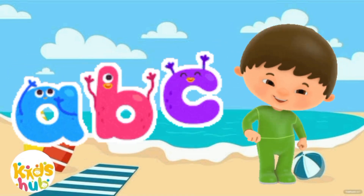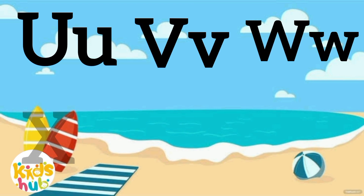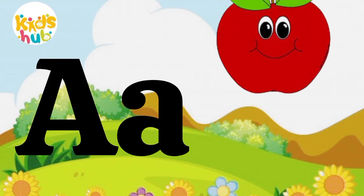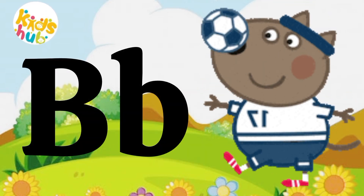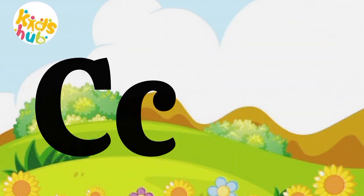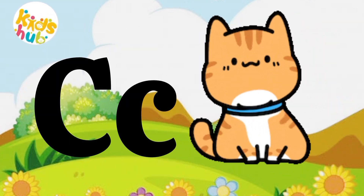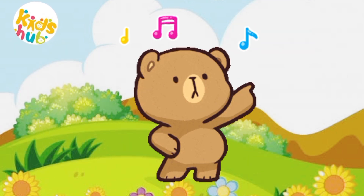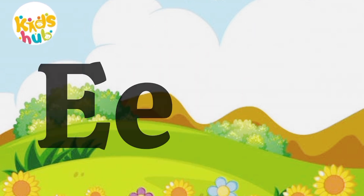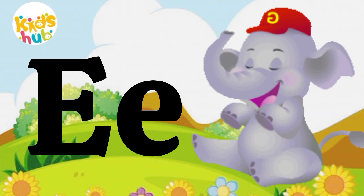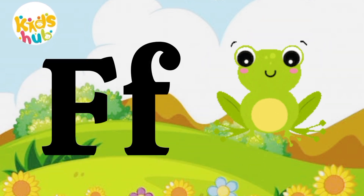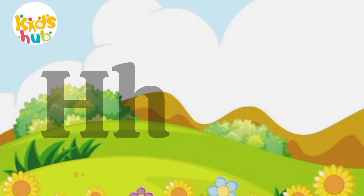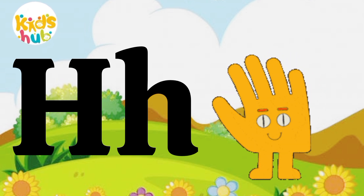A is for apple, a-a-a-apple. B is for ball, bu-bu-bu-ball. C is for cat, cu-c-ca-cat. D is for doll, d-d-doll. E is for elephant, e-e-elephant. F is for frog, f-f-frog. G is for goat, g-g-goat. H is for hand, a-a-hand.